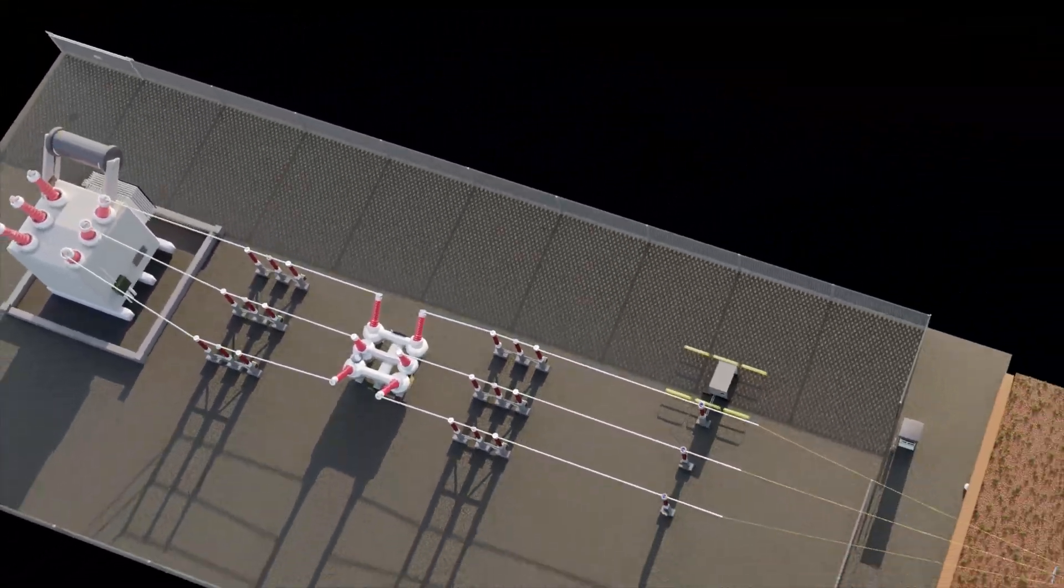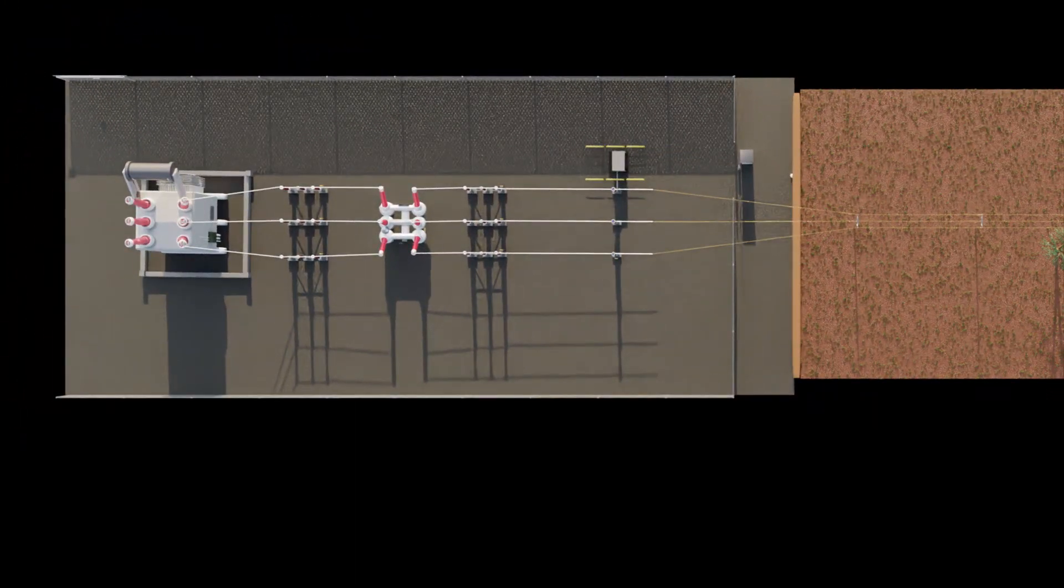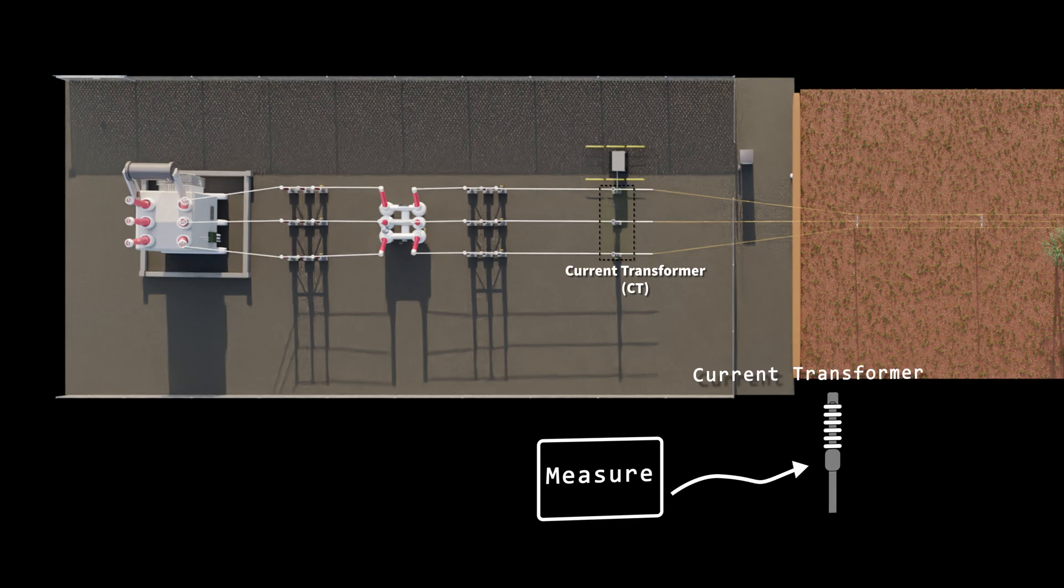The fundamental principle of overcurrent protection is to continuously monitor the current on the system, and if it seems too high it will disconnect the feeder. The measurement of the current is done by the current transformer. This steps down the current to a low enough level to be measured properly.